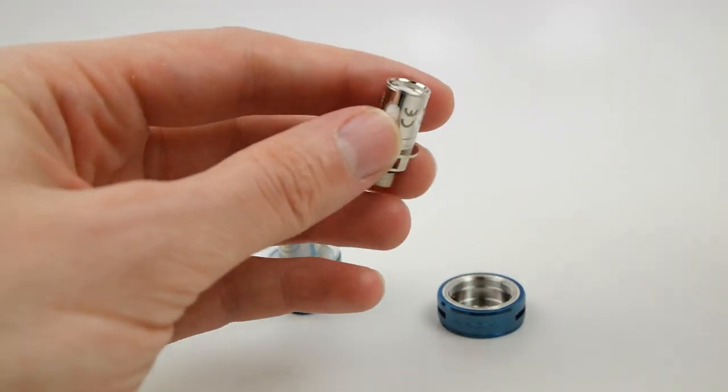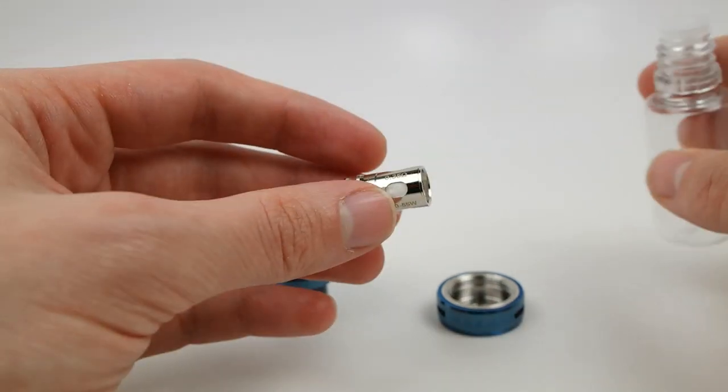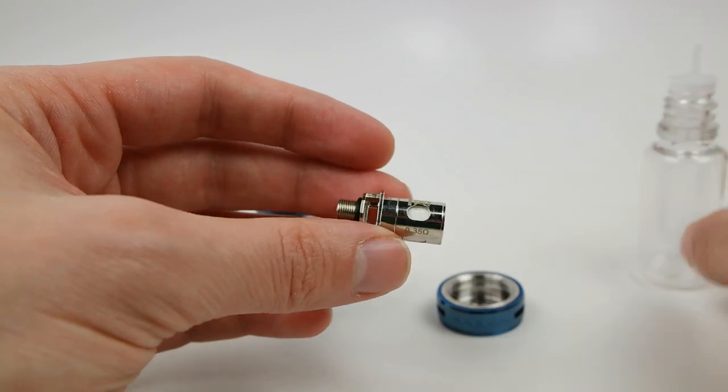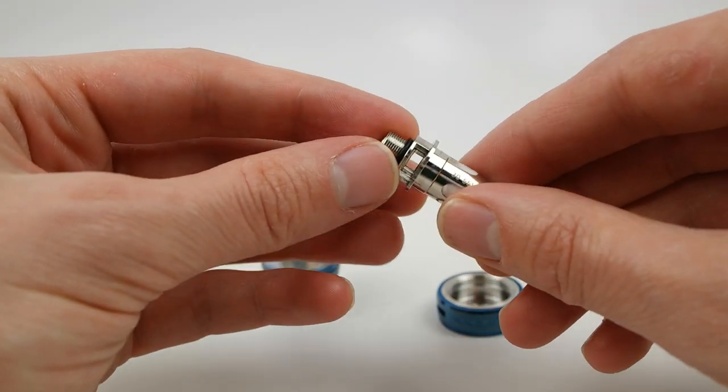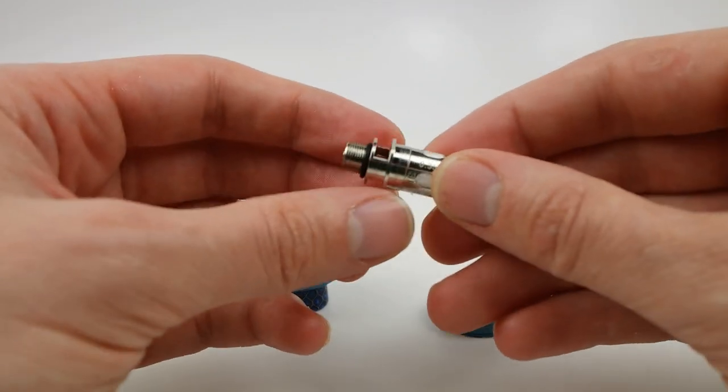At this point, you'll want to prime the coil by adding e-juice to the cotton. If you over-prime, you can wrap the coil in a tissue, shake it out, and then dry off any excess liquid on the outside.